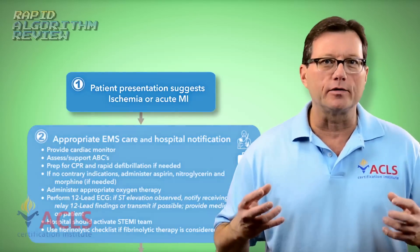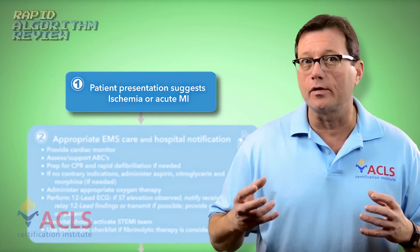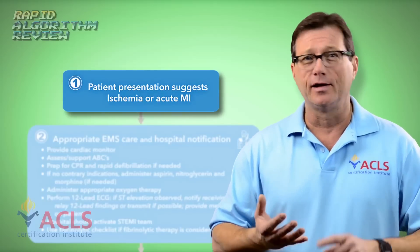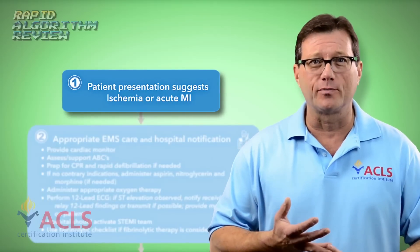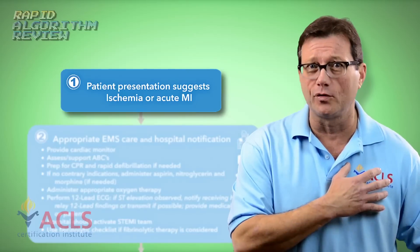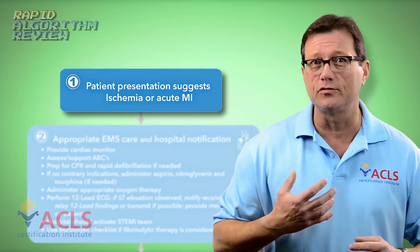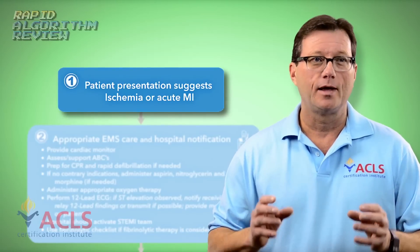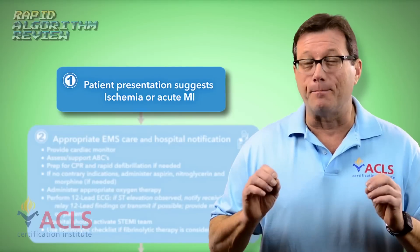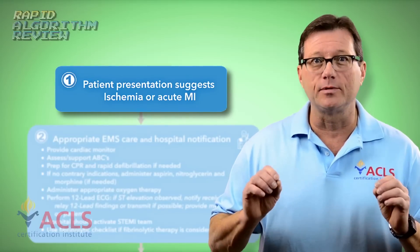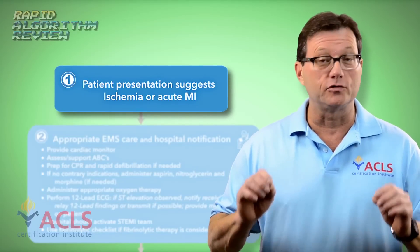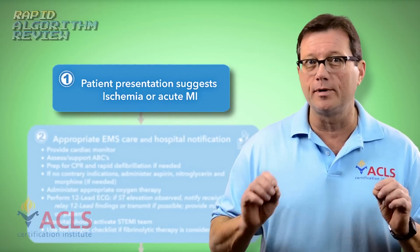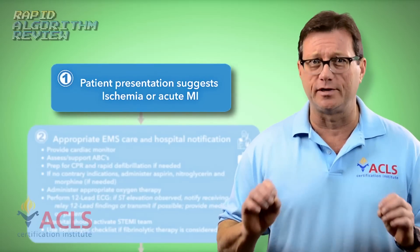When we think about heart attacks and acute coronary syndrome, we tend to think of the typical symptoms: chest pain, shortness of breath, pain radiating up into the shoulder, maybe up into the jaw. Remember that in women, unusual fatigue by itself can be a symptom of a heart attack and should be suspect for acute coronary syndrome.